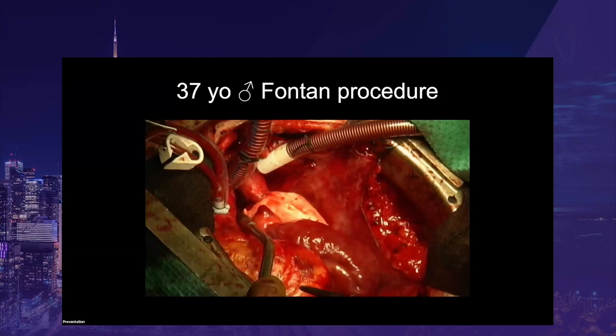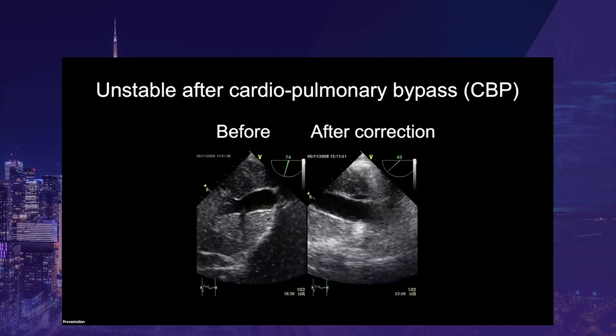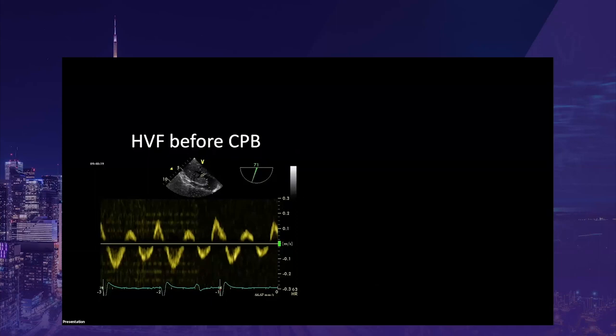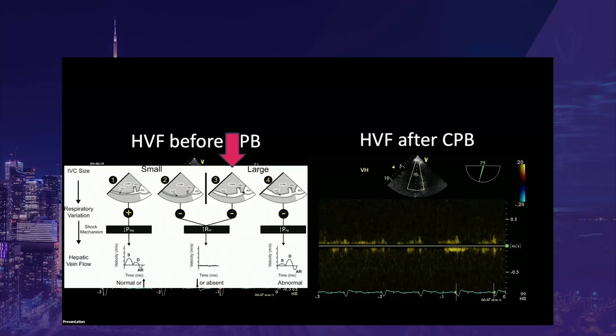Here is a 37-year-old man who had a Fontan procedure for congenital heart disease. He became unstable after weaning from cardiopulmonary bypass. A pulse-wave Doppler of the hepatic vein was mostly normal before cardiopulmonary bypass, but velocities were greatly reduced after. This finding, in combination with a dilated IVC, is compatible with IVC stenosis post-Fontan procedure. The possibility of IVC obstruction or stenosis should always be verified after any procedure involving manipulation of the IVC.